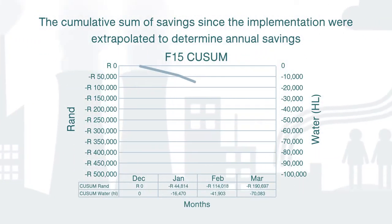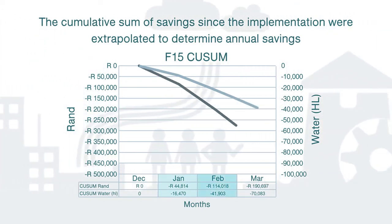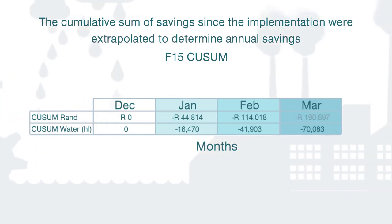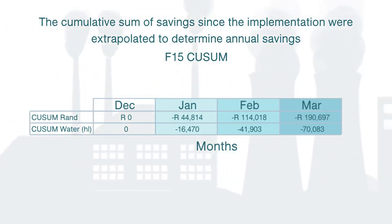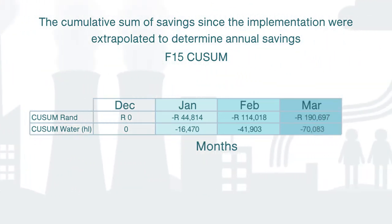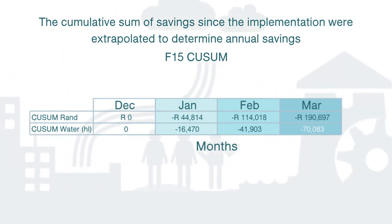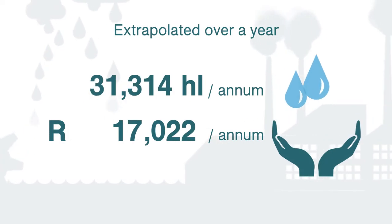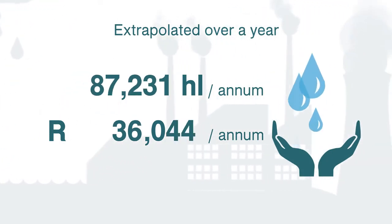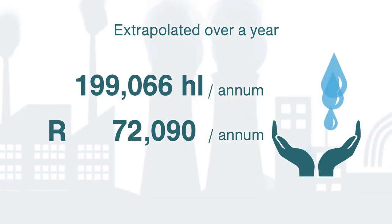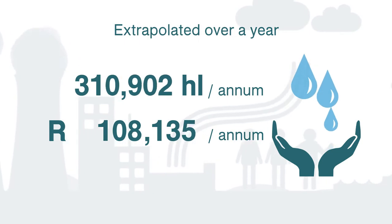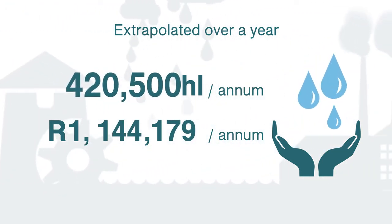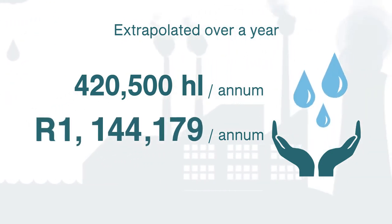The actual savings measured over a three-month period yielded a cost saving of R190,697, equivalent to a reduction of 70,083 hectolitres of water, with a one-month payback period. When extrapolated over a year, assuming no further changes were made to the process, this would yield a projected annual saving of 420,500 hectolitres, or over R1 million.